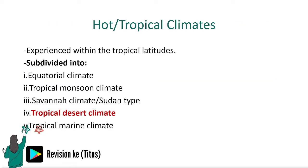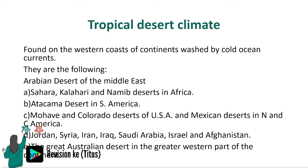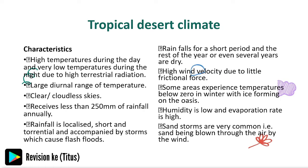The tropical desert climate is found on the western coasts of continents washed by cold ocean currents. These include the Arabian Desert, the Sahara, Kalahari, and Namib Deserts in Africa, the Atacama and Mojave Deserts, and the Jordan-Syria-Iraq-Saudi Arabia region. Key characteristics: humidity is low, evaporation rate is high, sandstorms are commonly experienced, rainfall is localized, and skies are clear.